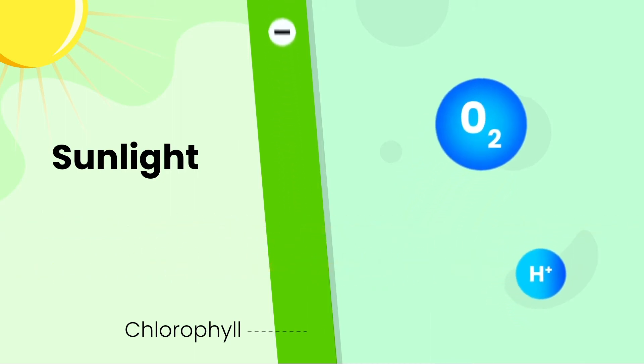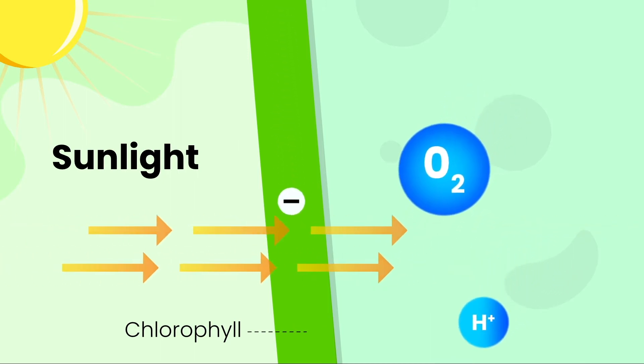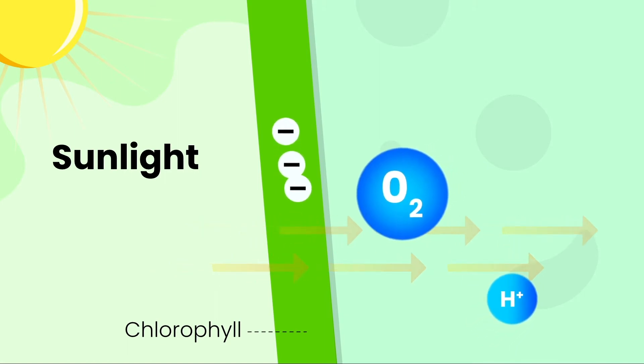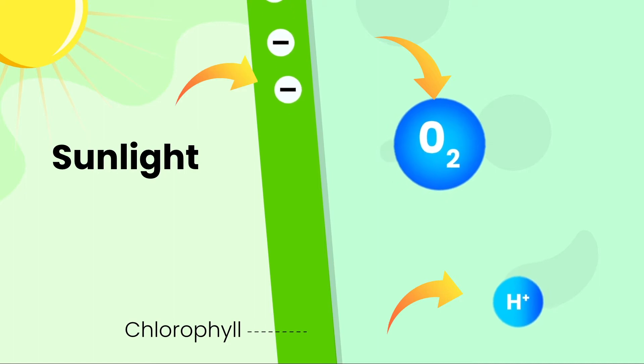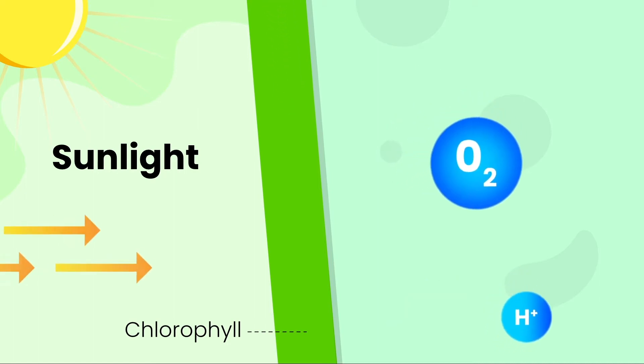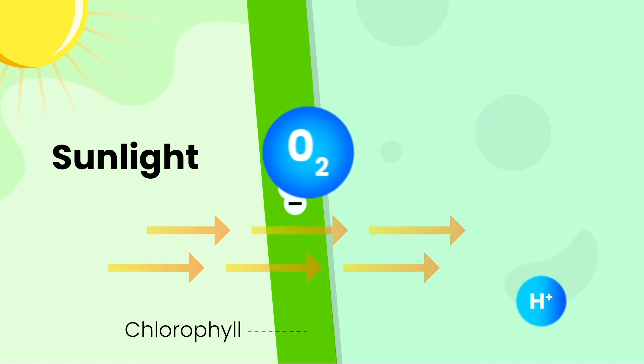Now during this process, electrons are released. So now we have three separate things from water: oxygen, hydrogen, and the newly released electrons. Oxygen is released back into the atmosphere, which we breathe.